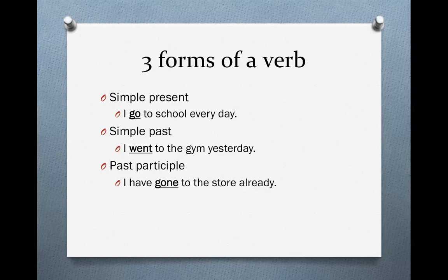First of all, there are three main forms of a verb. The simple present, I go to school every day, or he goes with an es, to school every day. Simple past, I went to the gym yesterday. And the past participle, I have gone to the store already. We use the past participle with a form of the verb have. You will always see the past participle with has, or have, or had.